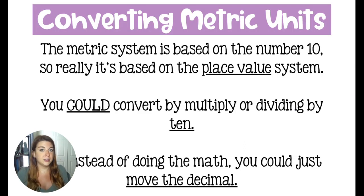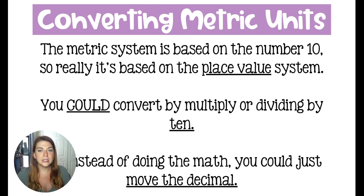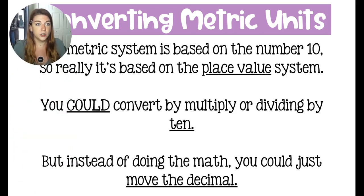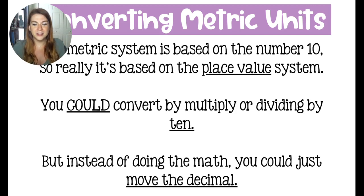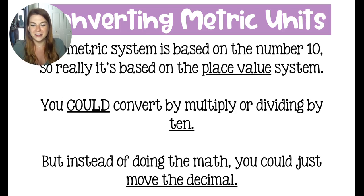The metric system is based on the place value system. Kilo represents 1000 of the base units, hecto represents 100 of the base units, and the only difference there is that extra zero on the end. So the metric system is based on the number 10 and the place value system. We could convert all of our units by multiplying and dividing by 10 each time, but instead of doing that, because it's based in the place value system, we're just going to move the decimal — why do it the hard way if we could do it the easy way? I'm not a big math brain. So I am going to explain it as if I was teaching myself the way I would want to learn it — as little math as possible. We're just going to move the decimal.